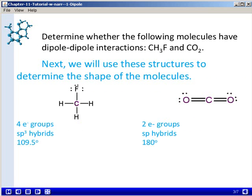Next, we're going to use those Lewis structures to determine the shape of the molecules. Notice that for the CH3F molecule, the central carbon atom has four electron groups or clusters, which leads to the formation of sp3 hybrid orbitals, which are 109.5 degrees from one another.